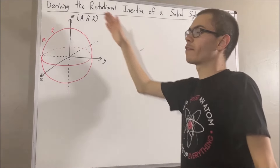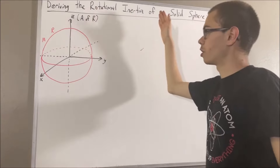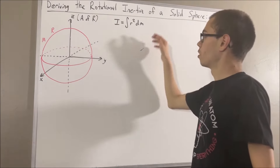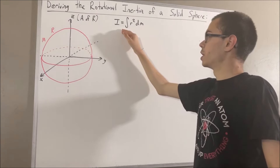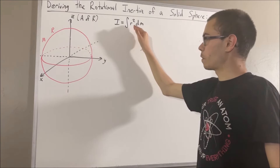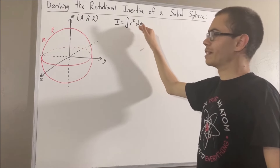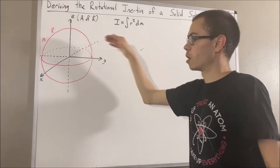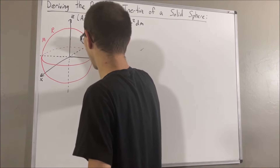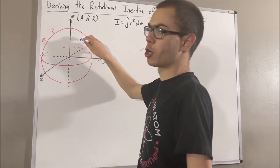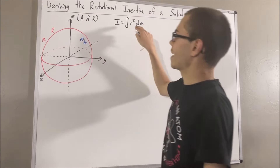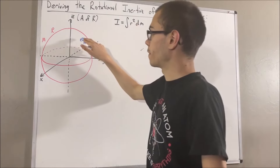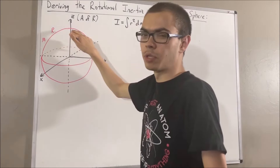In deriving the rotational inertia, we're going to use the following formula. Rotational inertia is just the integral of r squared dm, where dm refers to a differential mass of our sphere. So this is a differential mass of our sphere.